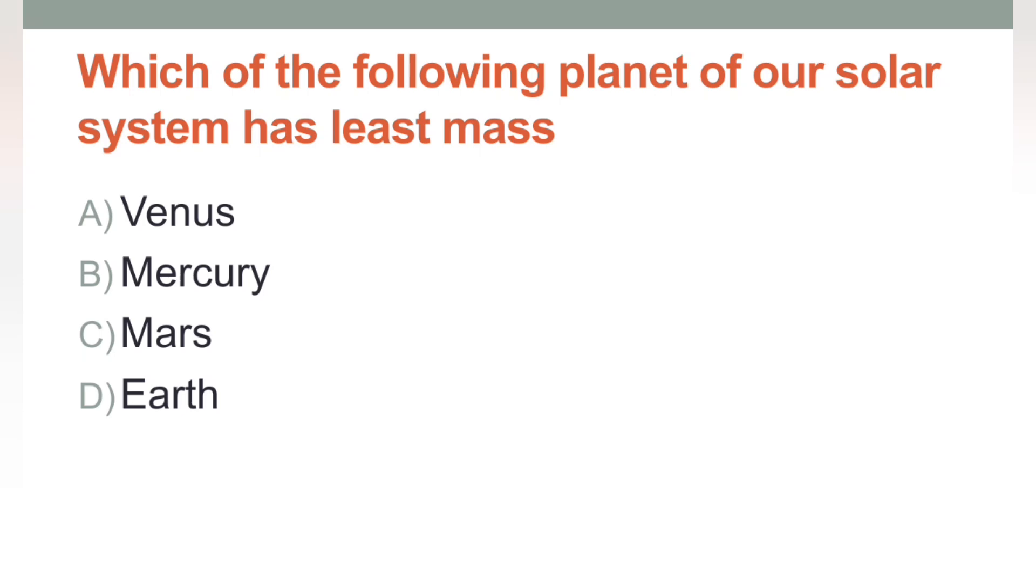Next is: Which of the following planet of our solar system has least mass? Matlab, sabse zyada, sabse kam mass kis mein hai. Obviously, abhi maine mass ki baat ki thi, toh hum ne bataya tha ki jo dwarf planets hai, woh solid hain, material unka solid hai. Toh isme saare hi dwarf planets diye rakhe hai, jaise Venus, Mercury, Mars and sorry, Earth.